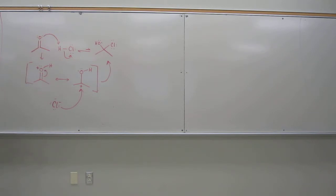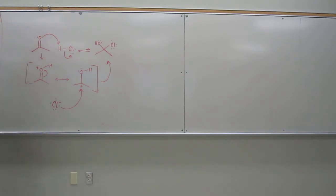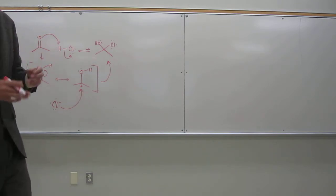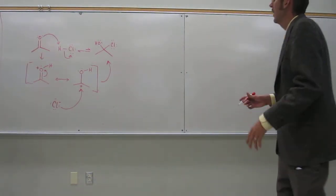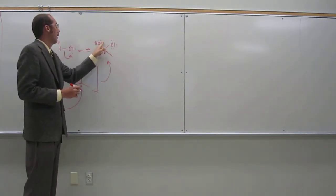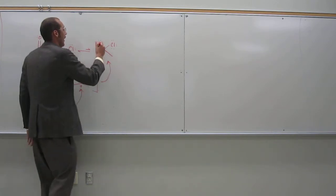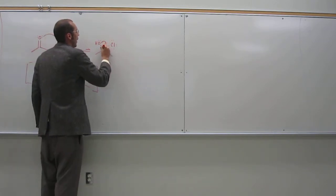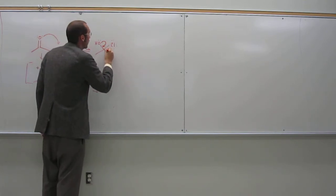But now, we've got to ask ourselves, is chlorine a good leaving group? Yes, it's a good leaving group. It's very stable on its own. And so, what'll happen is, because you've got these electrons here that are on that alpha carbon, what you'll have is what we call, essentially, an alpha elimination of that chlorine.